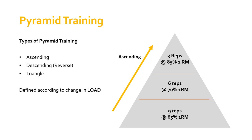If, however, the load is coming down — starting with three reps at 85 percent, then six at 70 percent, then nine at 65 percent — what we're doing is a descending pyramid, because we're defining the pyramid according to the change in load. Just to clarify: a descending or reverse pyramid is not the same as a drop set, because a drop set goes to failure. Descending or reverse pyramids use specific predetermined numbers of reps worked out in advance. A drop set is to failure; this is a descending pyramid — somewhat different.